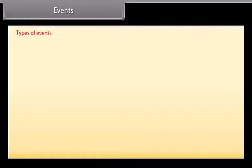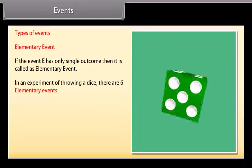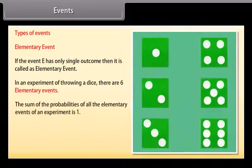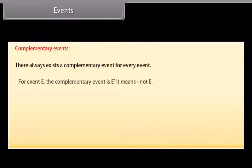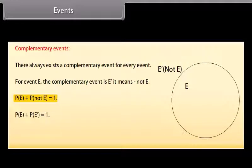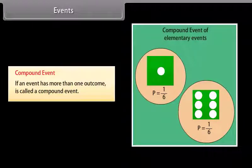Types of Events. Elementary event: if the event E has only a single outcome, then it is called an elementary event. In an experiment of throwing a dice, there are six elementary events. The sum of the probabilities of all the elementary events of an experiment is one. Complementary events: there always exists a complementary event for every event. For event E, the complementary event is E'. It means 'not E'. P(E) + P(not E) = 1, so P(not E) = 1 − P(E). Compound event: an event that has more than one outcome is called a compound event.